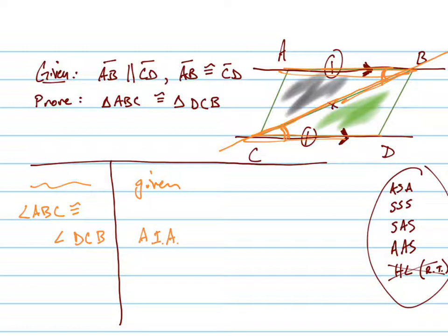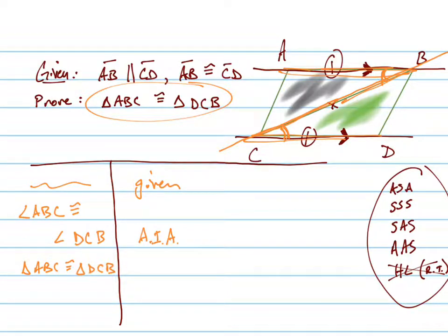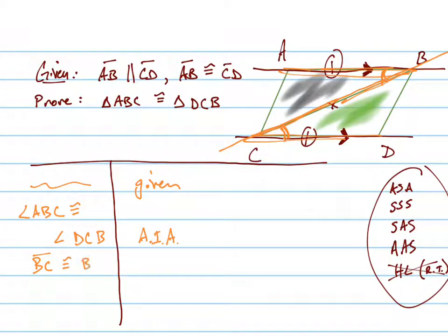Some teachers let you write just the initials AIA; others make you write out the entire postulate: alternate interior angles are congruent. Alternate interior angles assume there are parallel lines — when lines are parallel, alternate interior angles are congruent. So we also have to state that BC is congruent to BC, and that's because of the reflexive property.